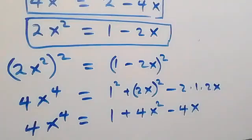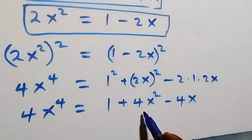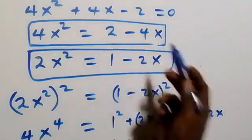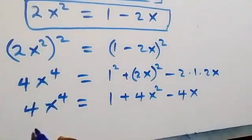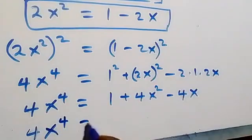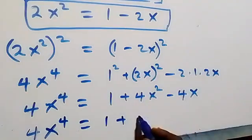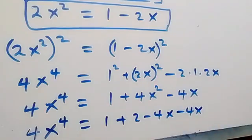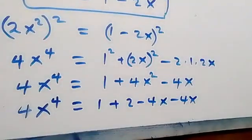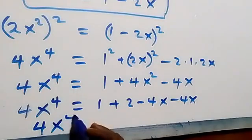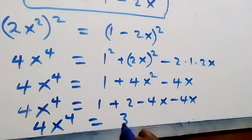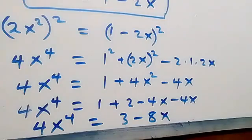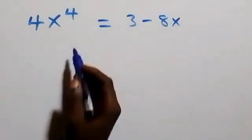Let's substitute what we have for 4x squared. We have 4x squared equals to 2 minus 4x. So this now becomes 4x⁴ equals to 1 plus (2 minus 4x) minus 4x, which simplifies to 4x⁴ equals to 3 minus 8x.